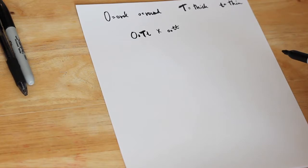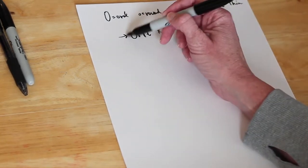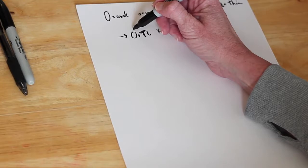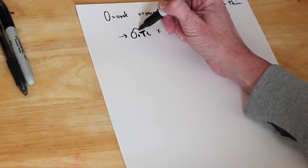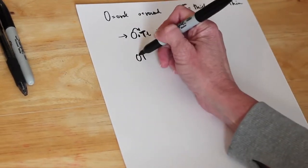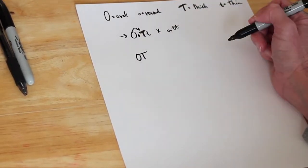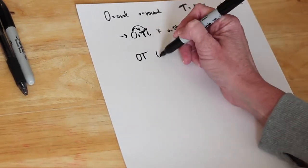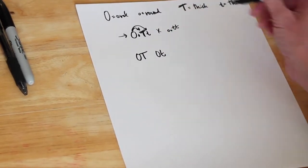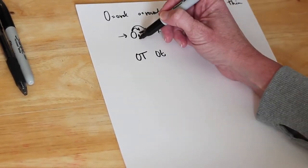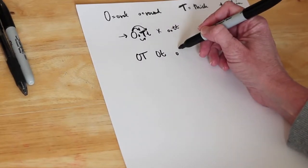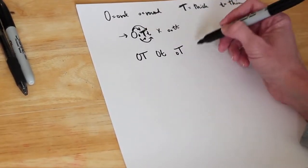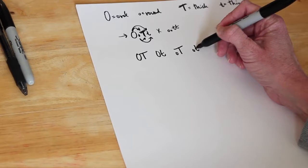Step one is to figure out the gametes of the heterozygous parent using the FOIL method. The first gamete is big O, big T. The second gamete is big O, little t. The third gamete is little O, big T. And the final gamete is little O, little t.